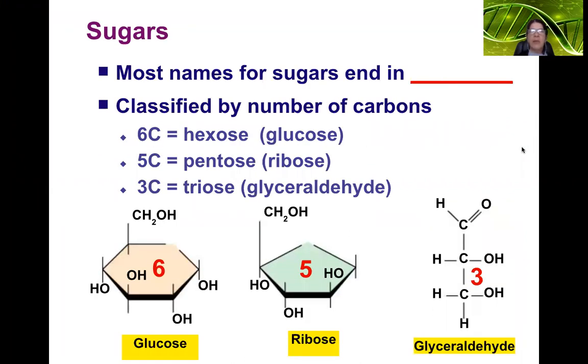Most names for sugars end in '-ose': sucrose, glucose, ribose.